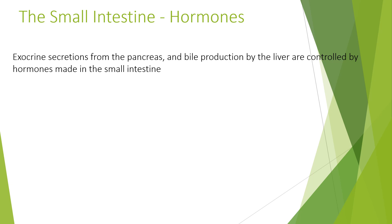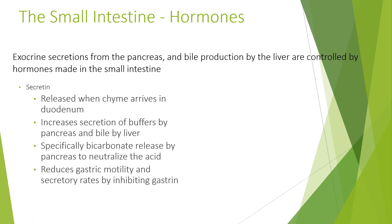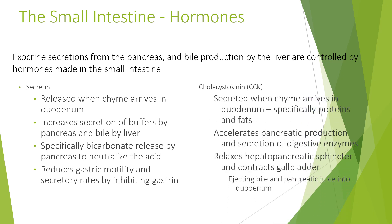Hormones in the small intestine control exocrine secretions of the pancreas and bile production by the liver. Secretin is released when chyme arrives in the duodenum; this increases the secretion of buffers by the pancreas and bile by the liver — specifically bicarbonate release by the pancreas — and decreases gastric motility and secretory rates by inhibiting gastrin. Cholecystokinin (CCK) is secreted when chyme, specifically proteins and fats, arrives in the duodenum. CCK accelerates pancreatic production and secretion of digestive enzymes, relaxes the hepatopancreatic sphincter, and causes contraction of the gallbladder, injecting bile and pancreatic juice into the duodenum.